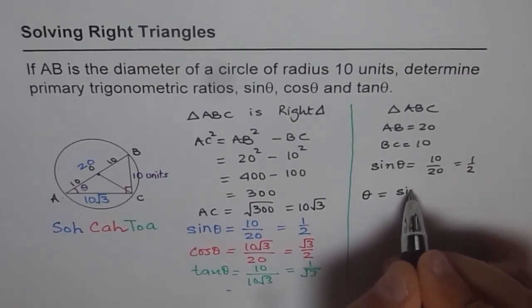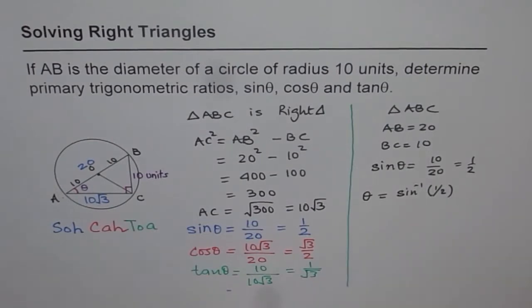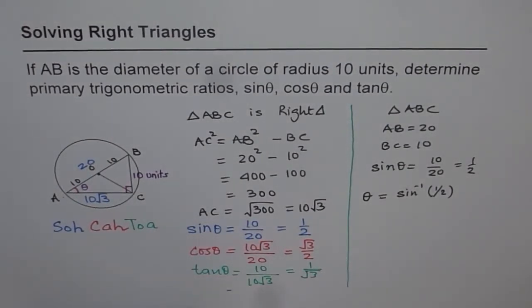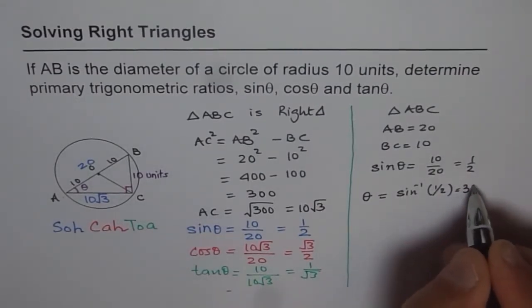Now from here you can find what angle θ is. θ is sin⁻¹ of 1/2. You can use a calculator to find angle θ, which gives second function sin⁻¹ within brackets (1/2), which is 0.5, equals 30 degrees. So we get θ equals 30 degrees.